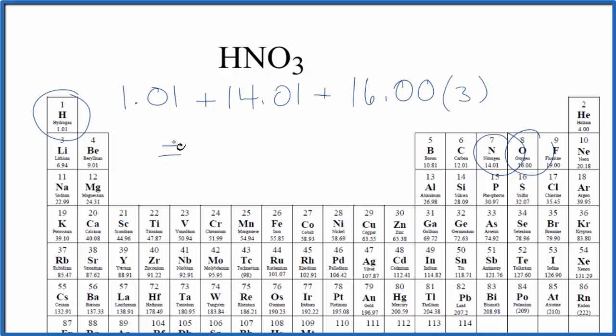When we add all of this up, we find the molar mass for HNO3 is 63.02, and the units are grams per mole. That means if we have one mole of nitric acid, it's going to weigh 63.02 grams.